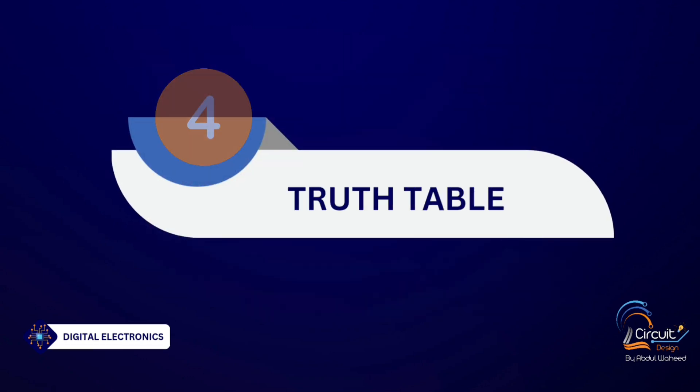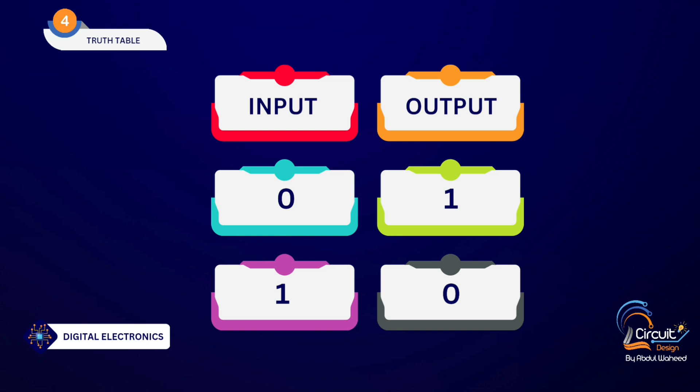Truth Table. The NOT gate has a single input, so there are only two combinations of inputs. When the input of the NOT gate is zero, then the output is one. In the second case, when the input is one, then the output of the NOT gate becomes zero.